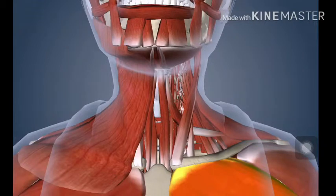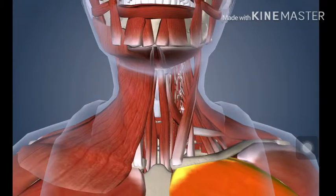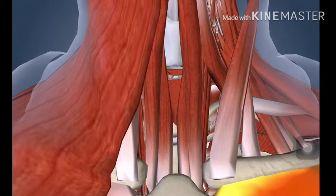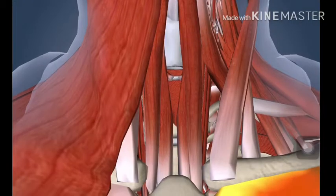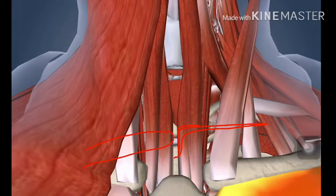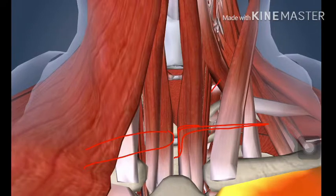The strap muscles are clinically important because while performing a tracheostomy, you have to go between these muscles, put retractors down there, and retract these muscles apart so that you can see the trachea below and then perform the tracheostomy.